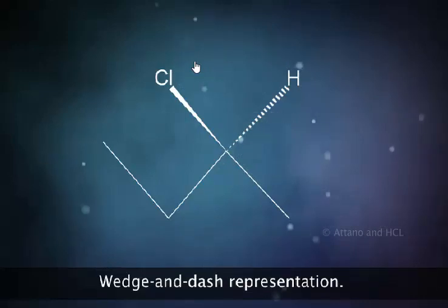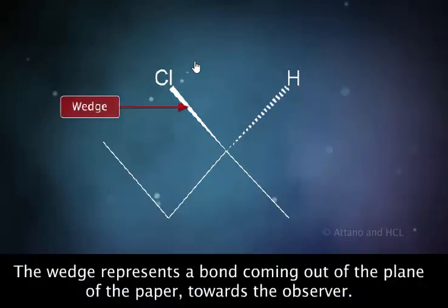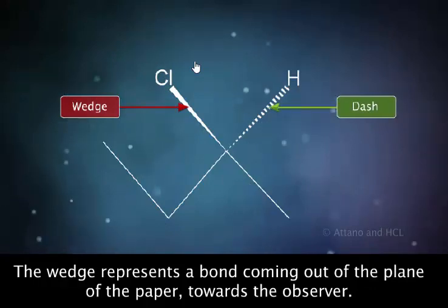In this formula, the wedge represents a bond coming out of the plane of the paper towards the observer. The dash represents a bond extending back behind the plane of the paper away from the observer.